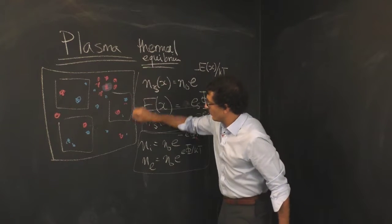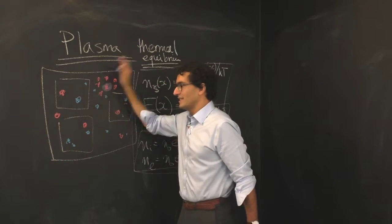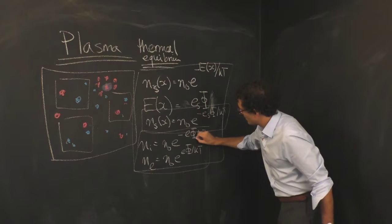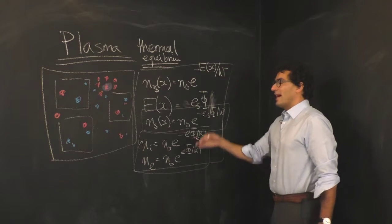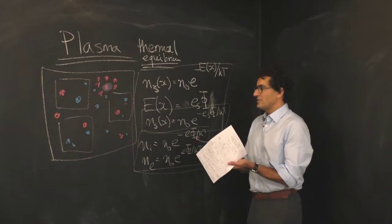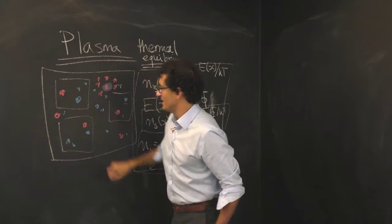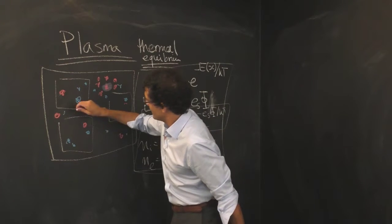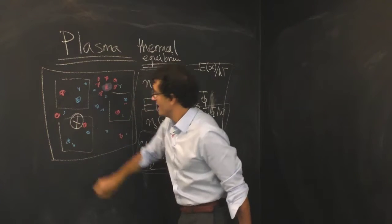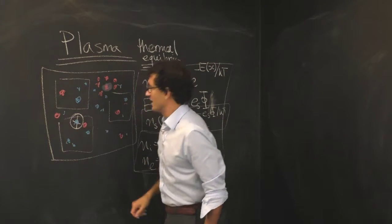Now we're going to ask how this gas that's constantly rearranging itself in response to the potential, how this gas would respond to the introduction of a new test particle. So we have our neutral gas, we have these particles here, and then what I'd like you to imagine doing is sticking in at some place in the gas, introducing a new particle, and we'll just say that's the electron.